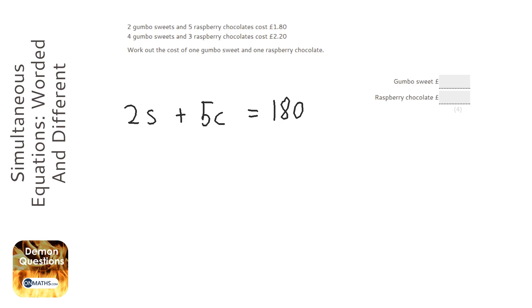I find pence a lot easier to work with. We can write the second equation as 4S plus 3C equals 220.